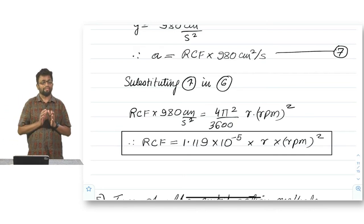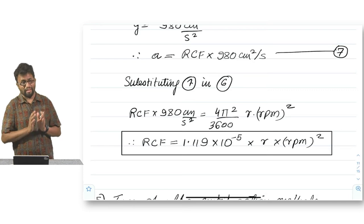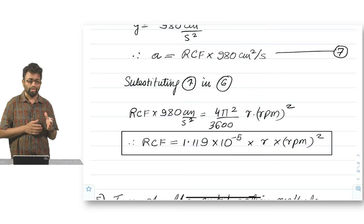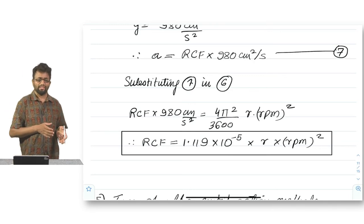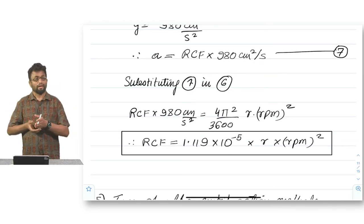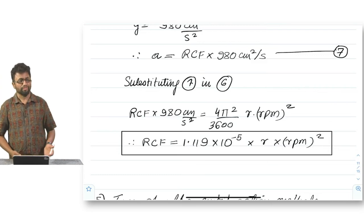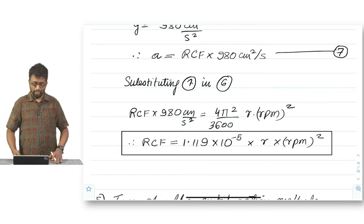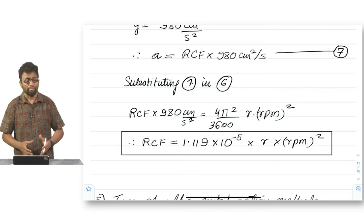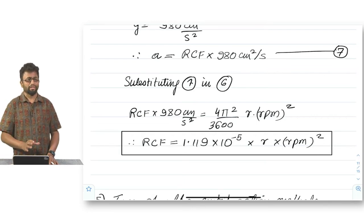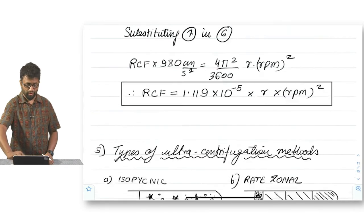So we now have a conversion factor for relative gravitational acceleration, RCF, and RPM. And if you want, if you know the RPM, you can get your RCF. And if you need to know the RPM for a known RCF, you need to rearrange and take square roots on the right side, okay? So this is your simple derivation of a very practical use and day-to-day requirement for centrifugation and ultracentrifugation.